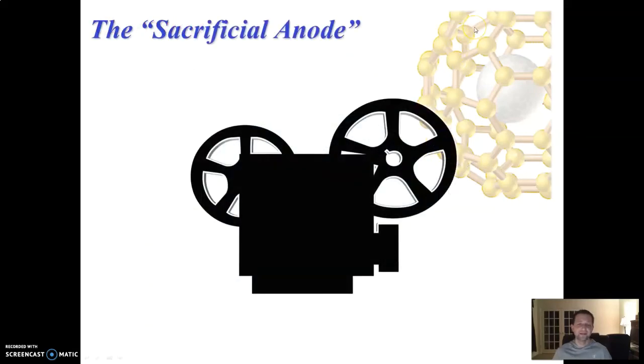Another method to prevent corrosion is the sacrificial anode. This is another way to protect metal from corrosion, and the concept was demonstrated in a short clip from the TV show Dirty Jobs.